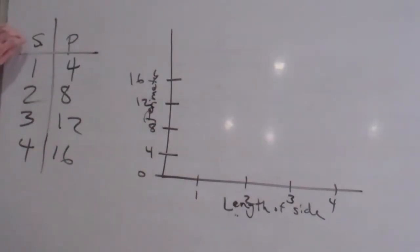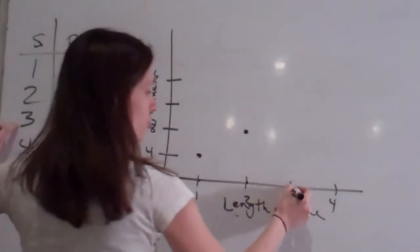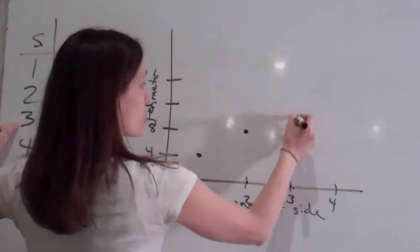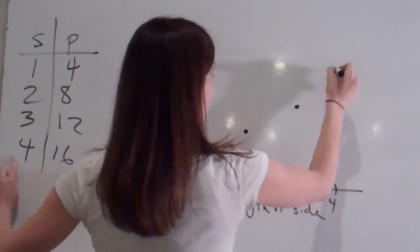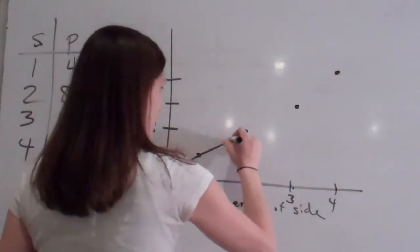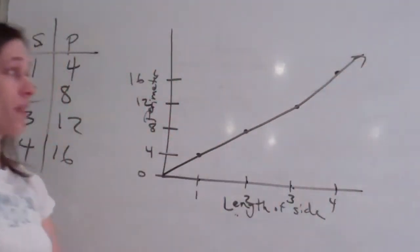So when my side was one, then my perimeter was four. When my side was two, my perimeter was eight. When my side was three, my perimeter was twelve. When my side was four, my perimeter was sixteen. What do you realize? It makes a diagonal line. Well, it's supposed to be diagonal. I didn't quite do a great job with that. So it graphs a straight line. So we're graphing that function. Everybody get it?